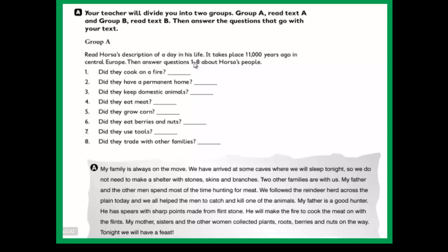Did they cook on fire? Did they have a permanent home? Did they keep domestic animals? Did they eat meat? Did they grow corn? Did they eat berries and nuts? Did they use tools? And did they trade with other families?